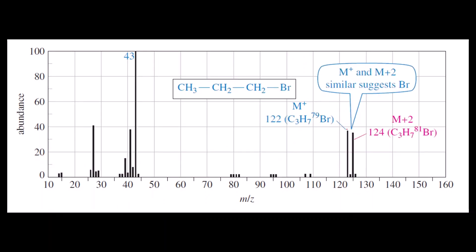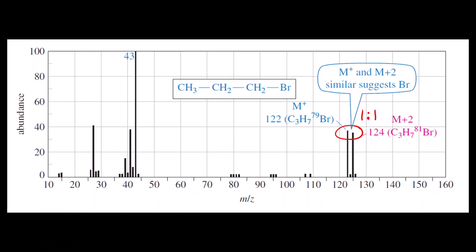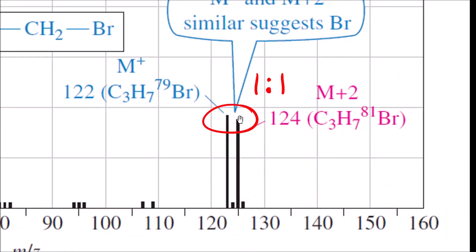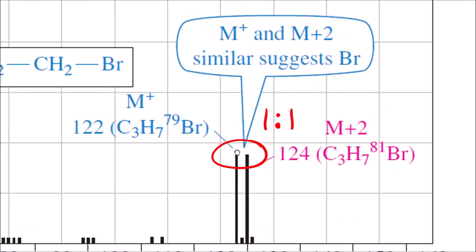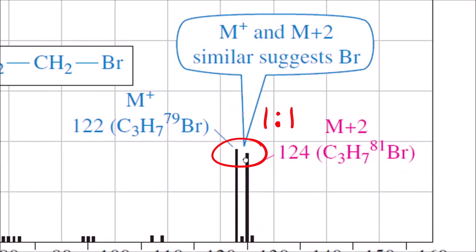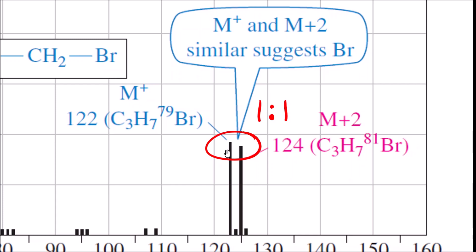For bromine, you can see the M+ ion peak and M+2 ion peak are both almost equal — a 1 to 1 ratio. I will zoom in to show it clearly — both peaks are exactly almost the same height.